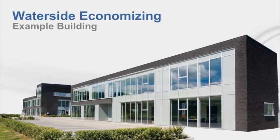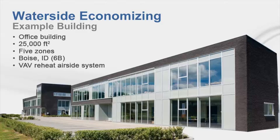In advance of this video, I created a building model using the new file wizard. If you're interested in learning how to use the new file wizard, please watch our other YouTube video that explains how to create a quick block building for analysis. For this example, we'll consider a 25,000 square foot five-zone building in Boise, Idaho, which is in climate zone 6B. I created the base model with no free cooling in advance. Let's go into the program now and I'll show you how to get started on setting up the Waterside Economizer alternatives.